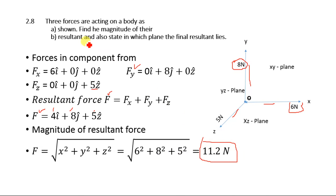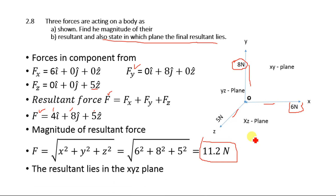For part B: state in which plane the final resultant lies. The final resultant lies in all three planes — the x, y, and z planes — because the force has components in the x-direction, the y-direction, and the z-direction. So the force F lies in the x-y-z plane.